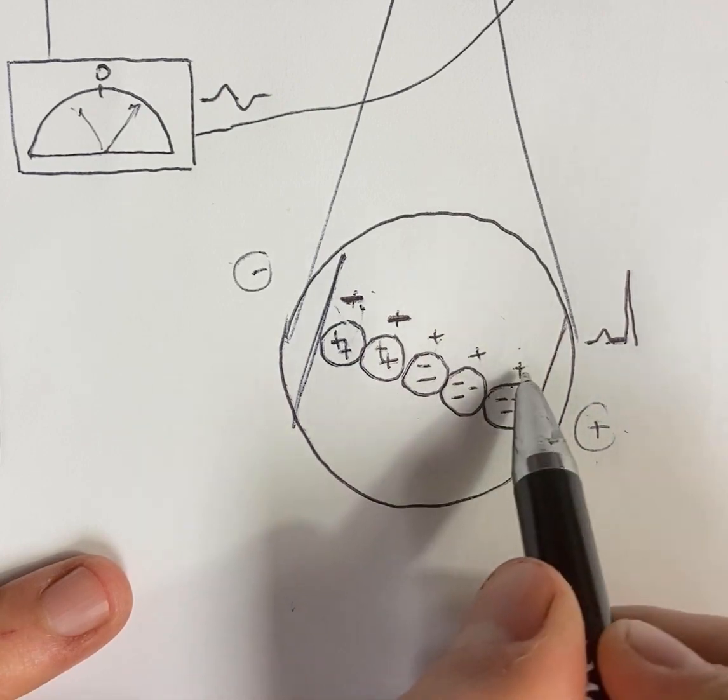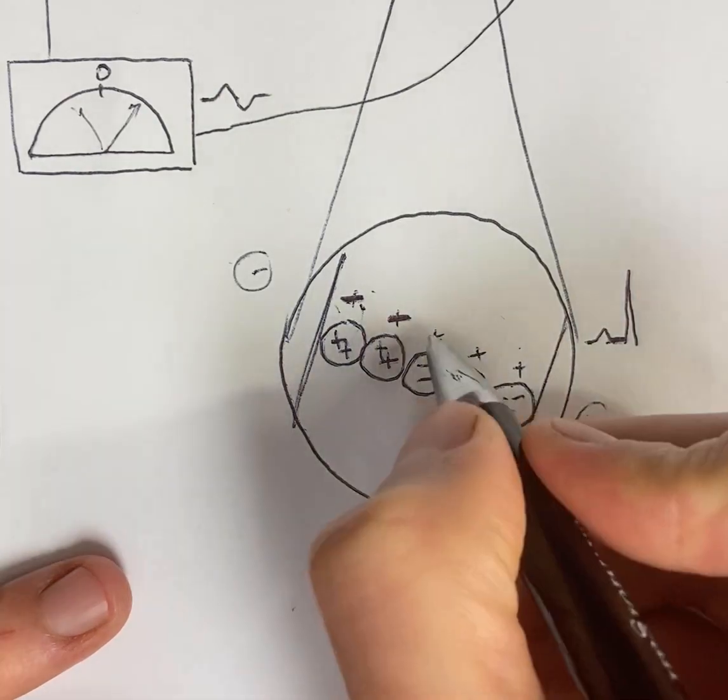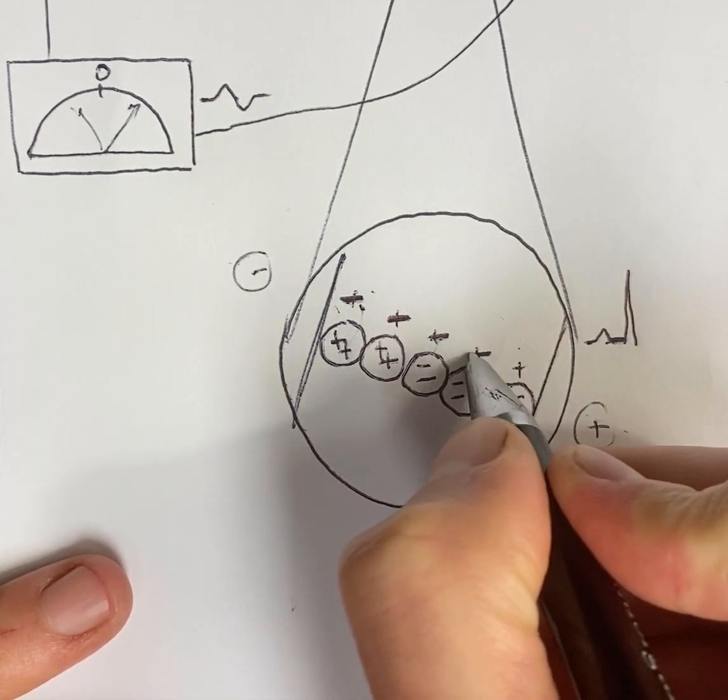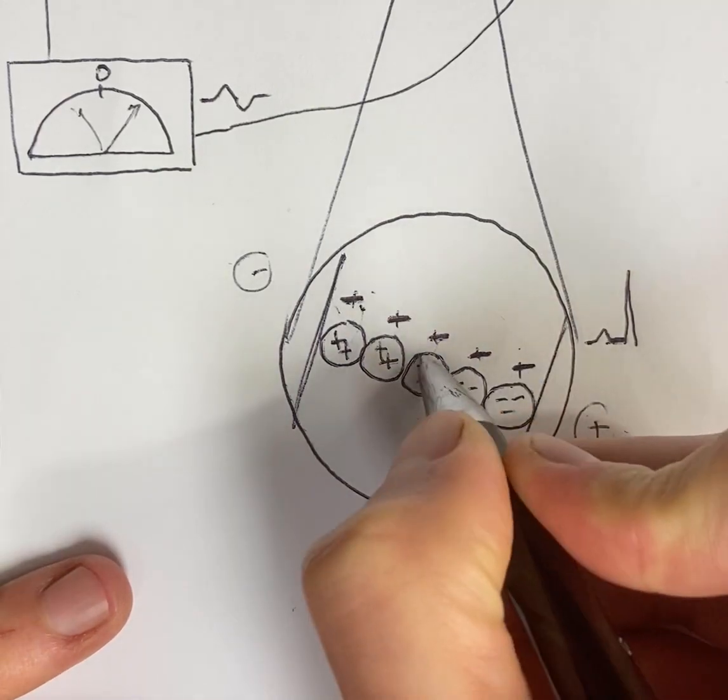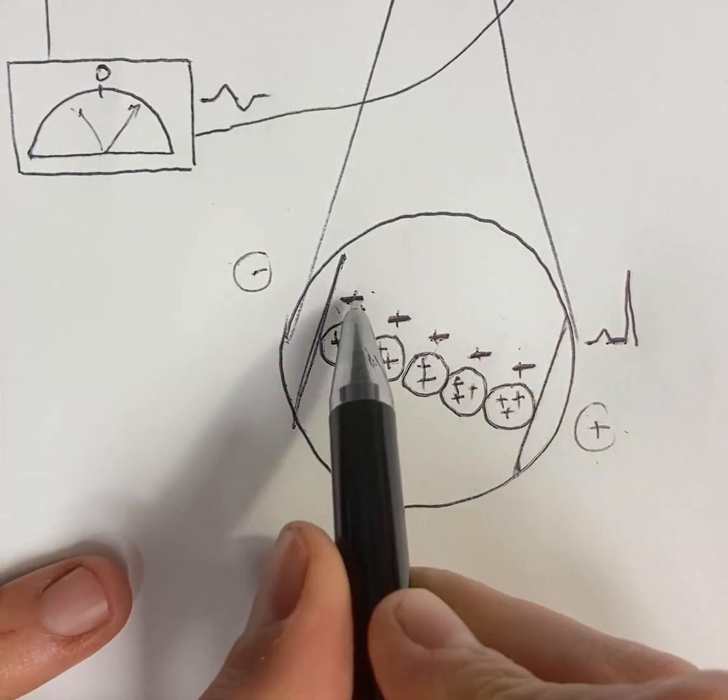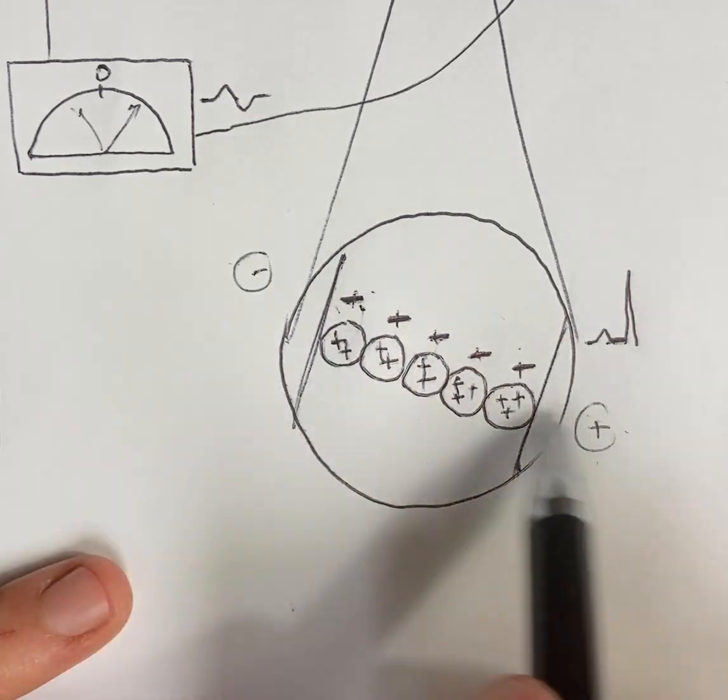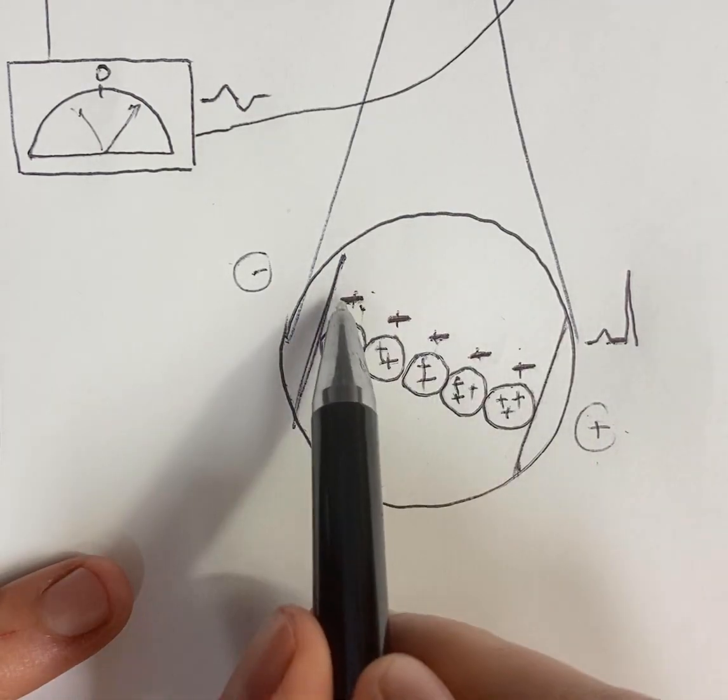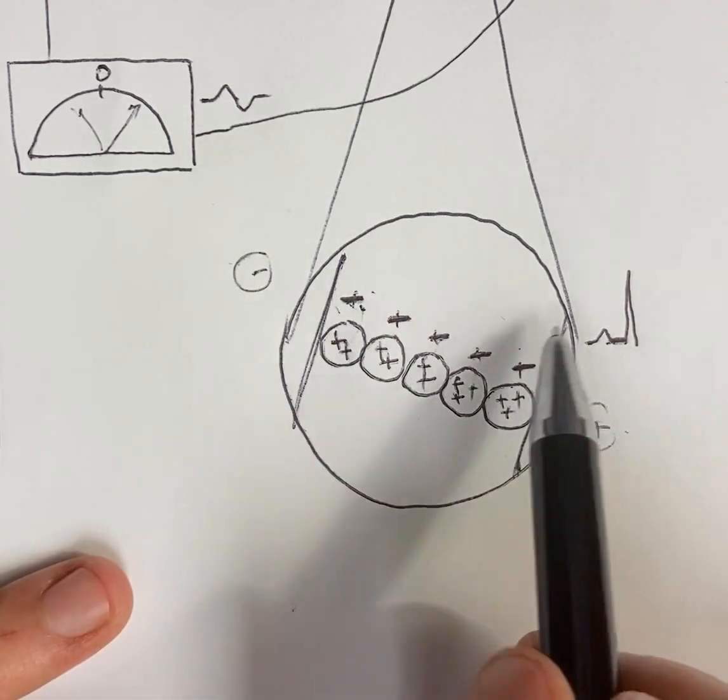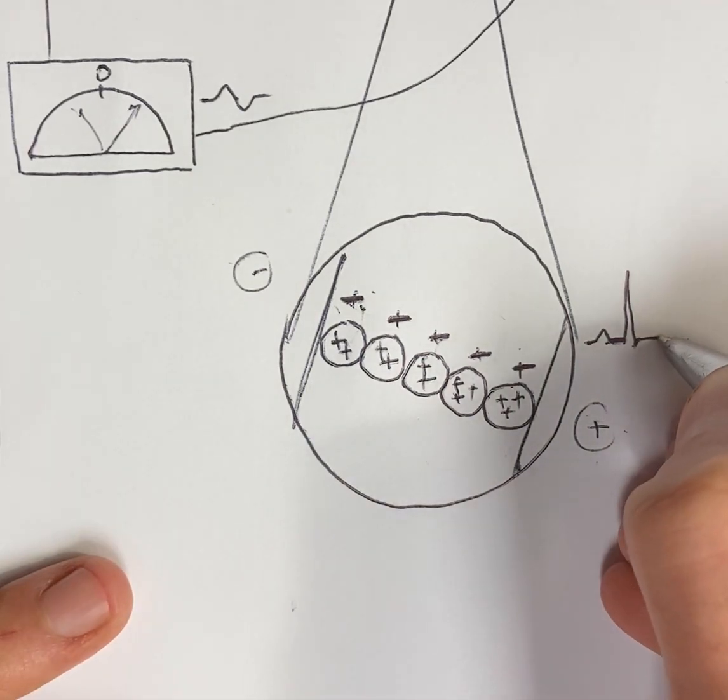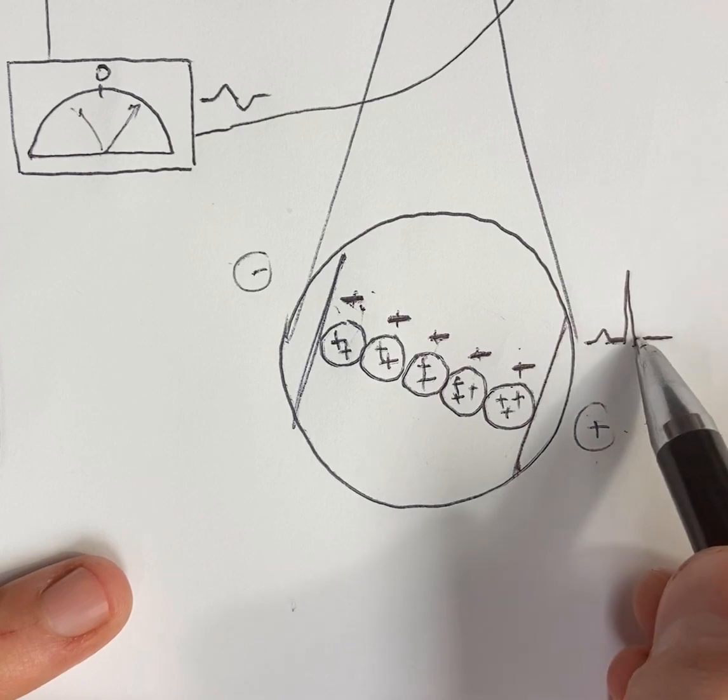Then, the rest of the ventricular thickness depolarizes and catches up, so everything inside is positive and everything outside is negative. Once again, the only thing the electrodes can see is the extracellular space, and it's all negative with no electrical field. That's why we have a flatline, an isoelectric ST segment.